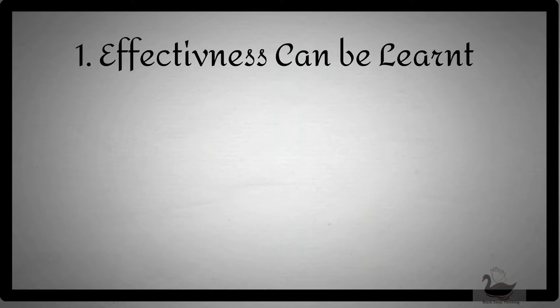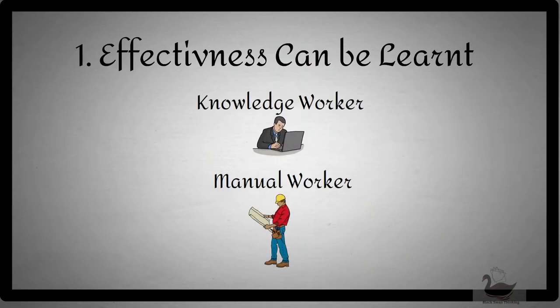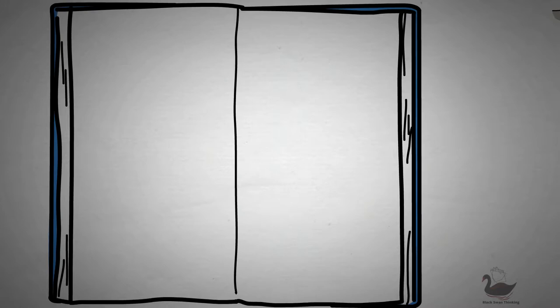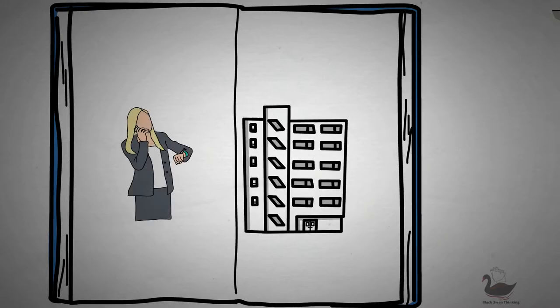Part 1: Effectiveness can be learned. Drucker states that there are two kinds of workers, the knowledge worker and the manual worker. For the purposes of this book, we will focus on the knowledge worker. A knowledge worker is any worker in a modern organization that is expected through their knowledge to make decisions that have an impact on the performance of said institution. This person is an executive.